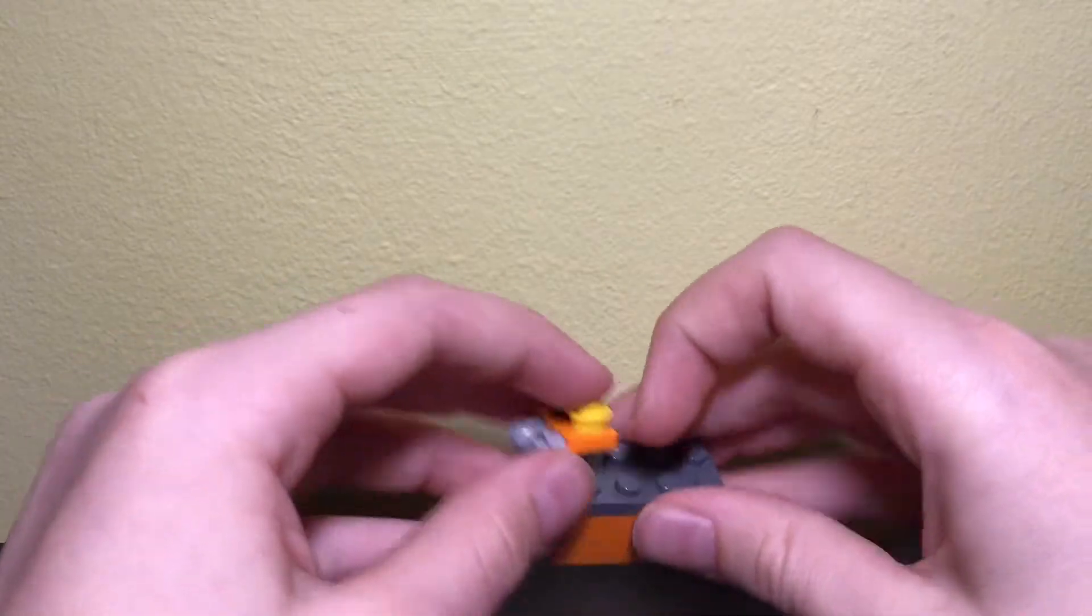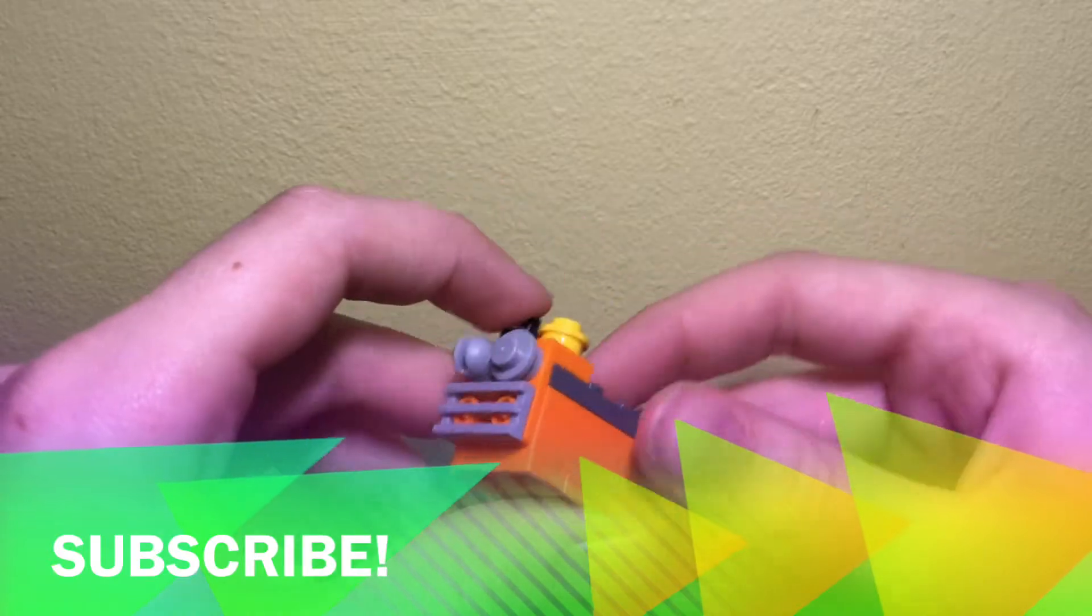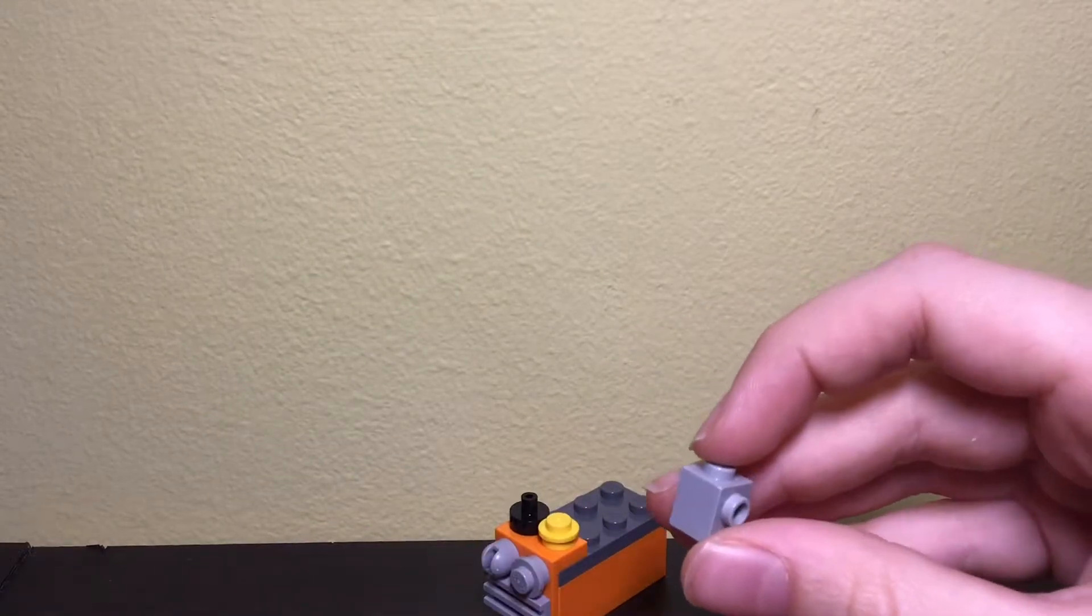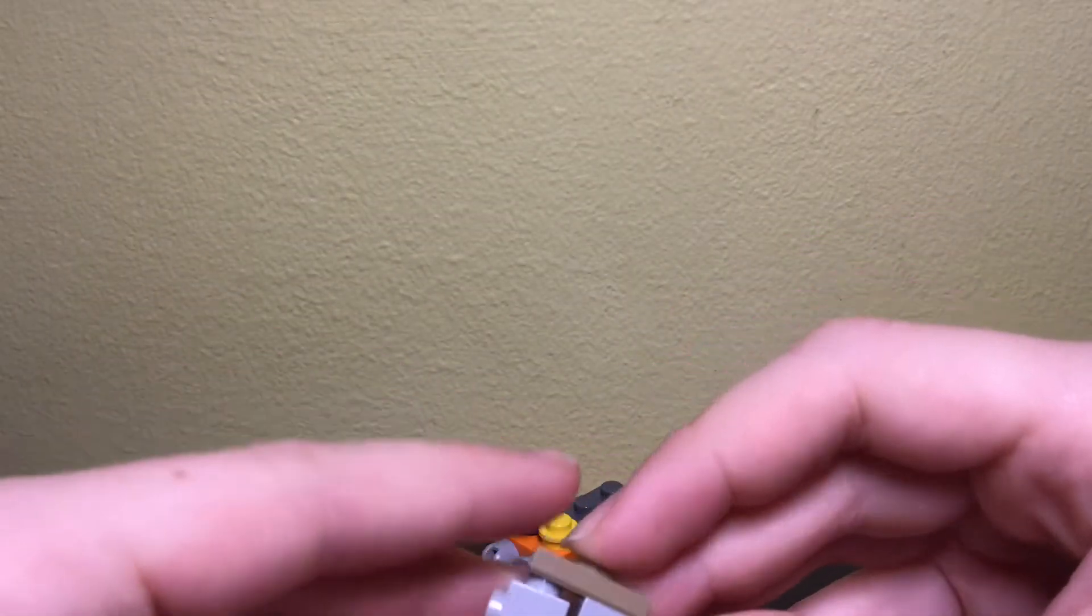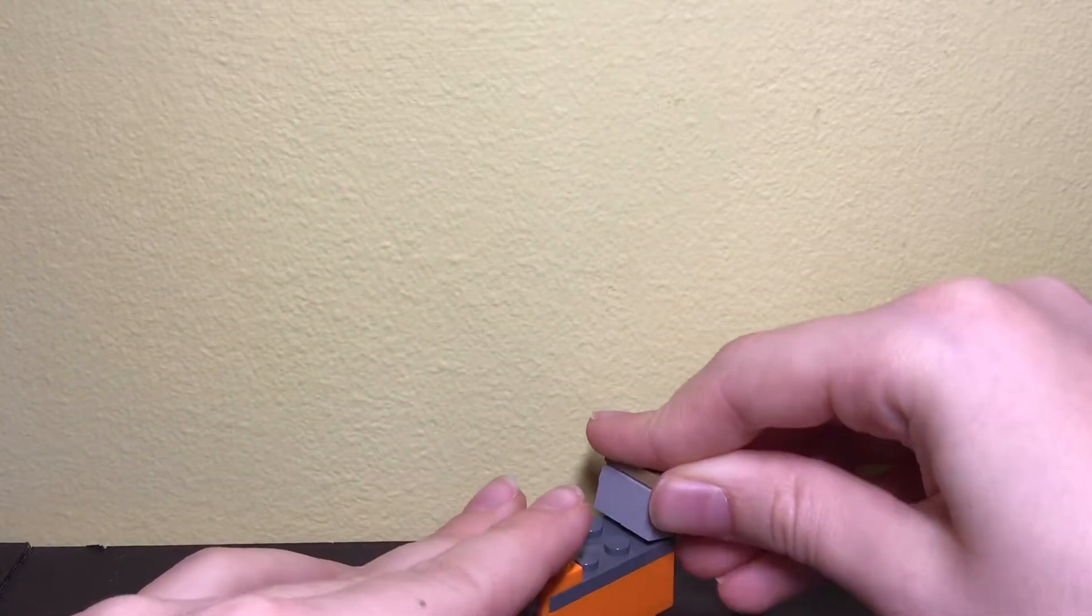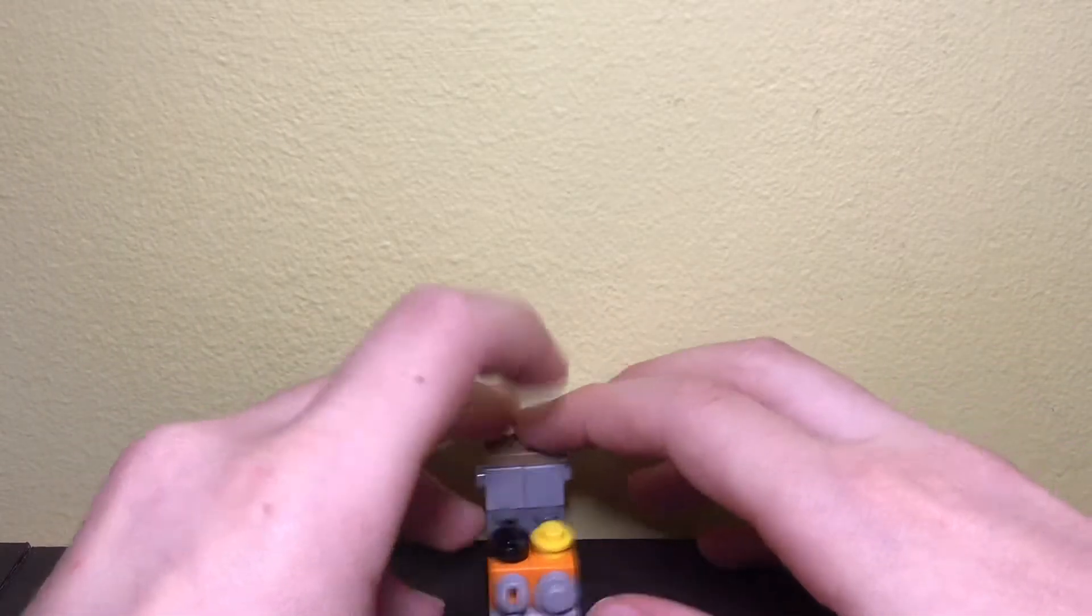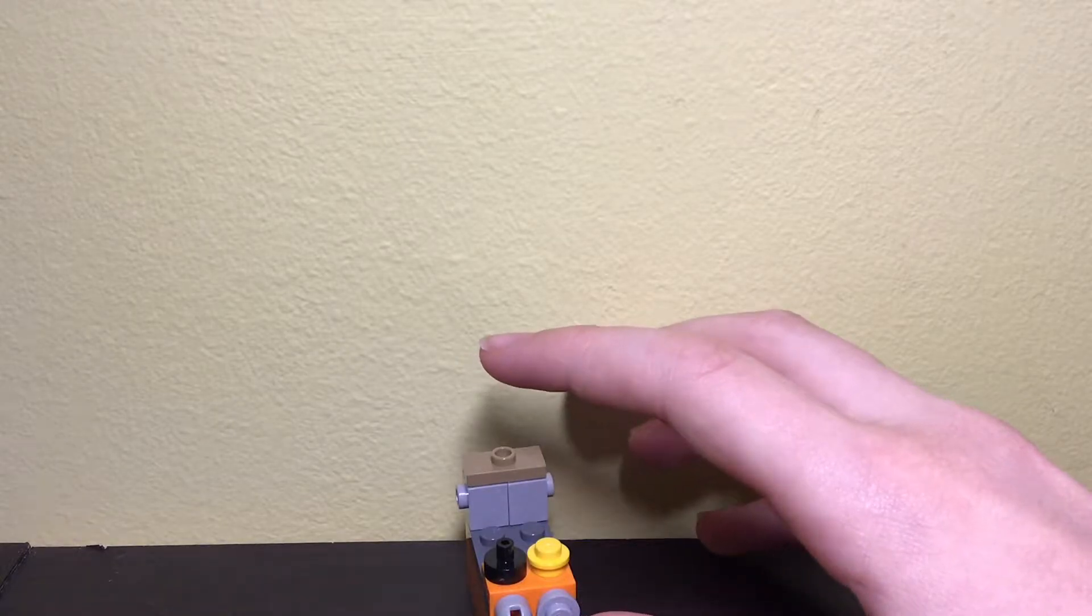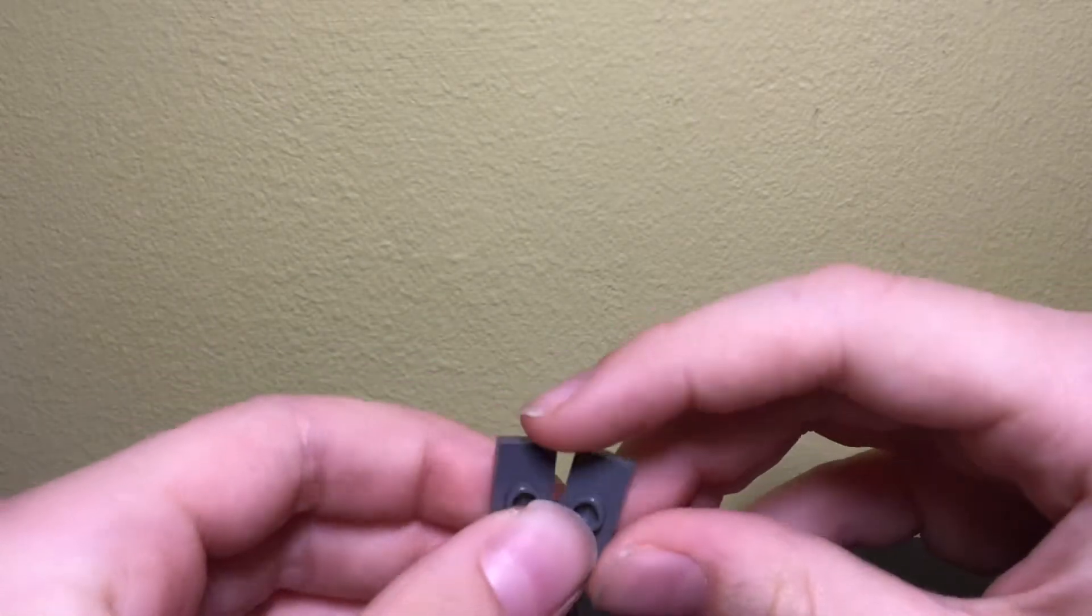Take two 1x1 bricks with studs on the side and attach them with a jumper plate or 1x2 plate. The color doesn't matter because it'll be against the wall. Sorry, I'm feeling a little sick - probably a cold - but it's okay.